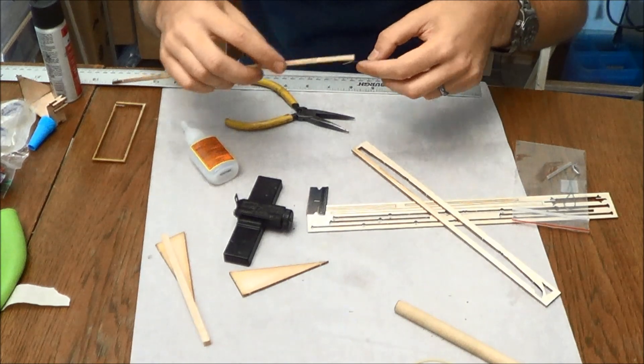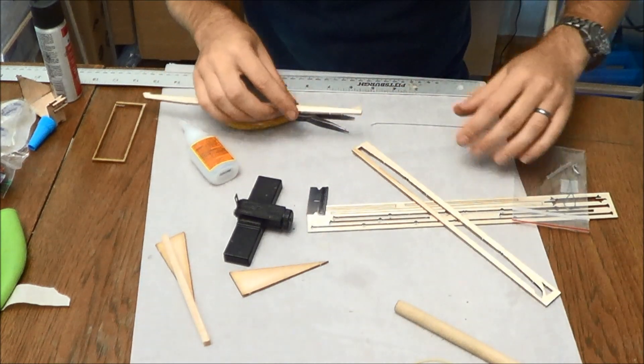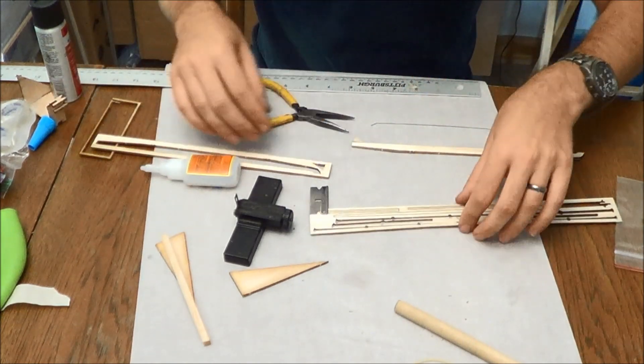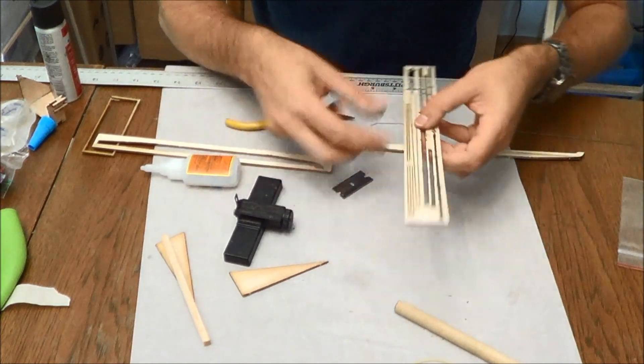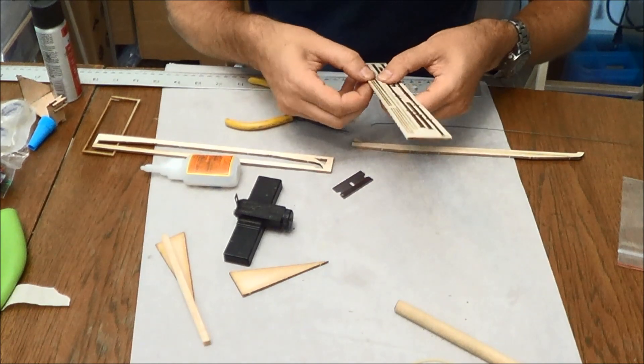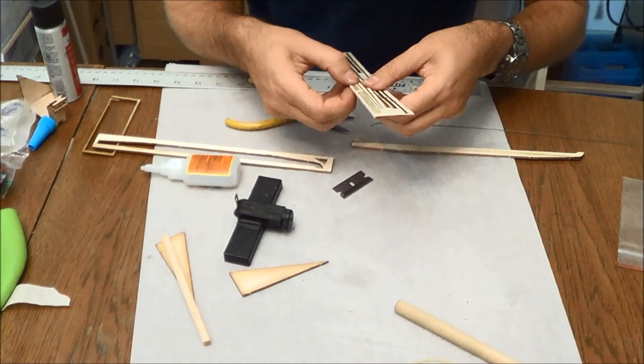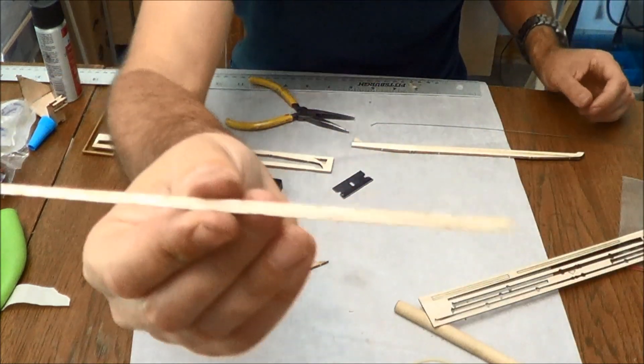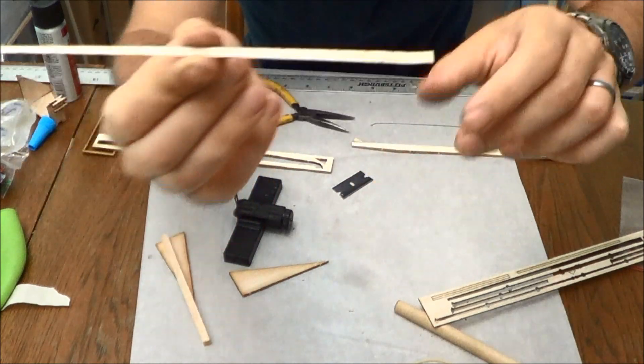Now set that aside just for a moment, because there's one other thing we want to do before we attach that component, and that is to go ahead and pop this tail boom out. This is your tail boom. Notice there is an angled part here.